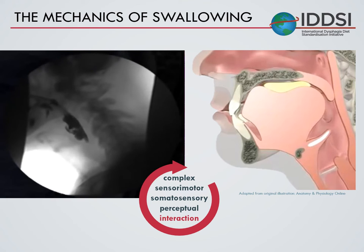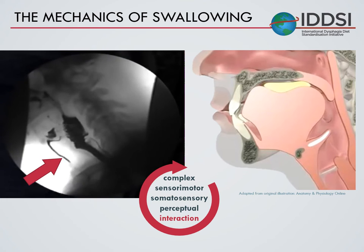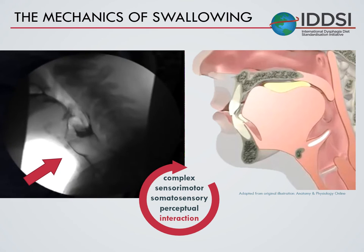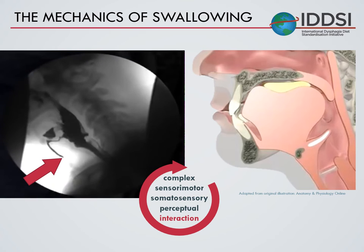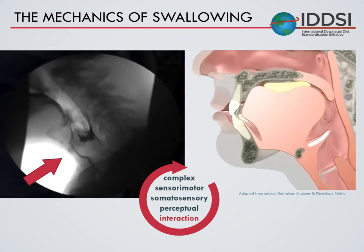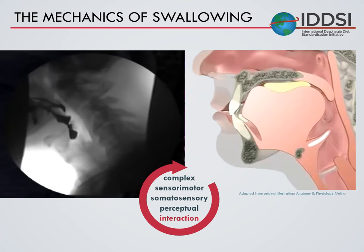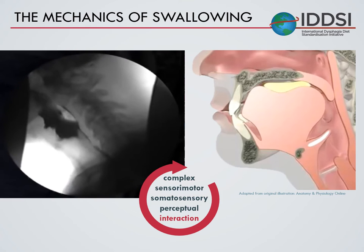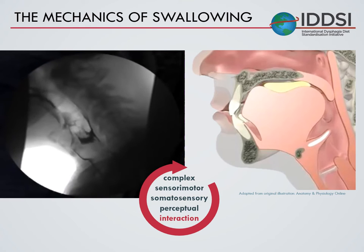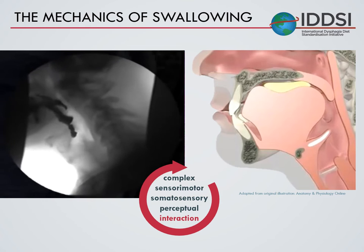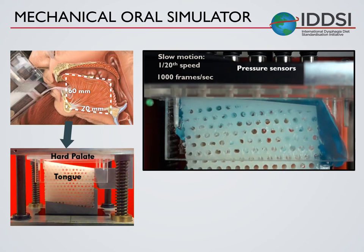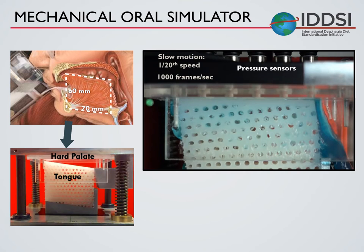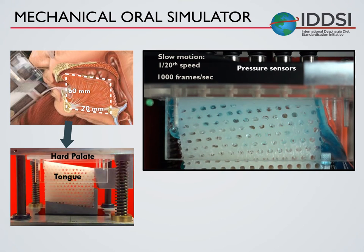Rather than focus on purely lab-based measurements, IDDSI were very keen that they wanted the standards to relate to what happens in clinical practice. Here we can see a video fluoroscopy of a swallowing study, where some of the fluid is being aspirated. Through the swallow, you can see that at sometimes the bolus is almost stationary, whereas other times it's accelerated to very fast flow rates. So it's important that a measurement captures this full dynamic range. Here at UCL, we've created a mechanical oral simulator to represent the compression between the tongue and hard palate.